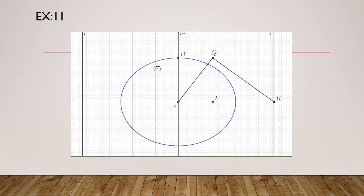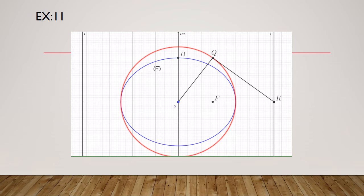Since Q belongs to the auxiliary circle and we have the center O, we can draw the auxiliary circle. This auxiliary circle cuts the line of F at points A and A', giving us the principal vertices. The last vertex B' is the symmetric of B with respect to O.